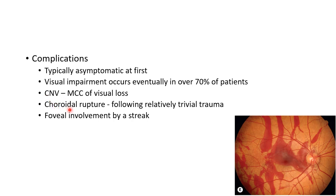There can be choroidal rupture following relatively trivial trauma in cases of angioid streaks. This picture shows subretinal hemorrhage following choroidal rupture in a case of angioid streak. There can also be foveal involvement by an angioid streak leading to impairment of vision.